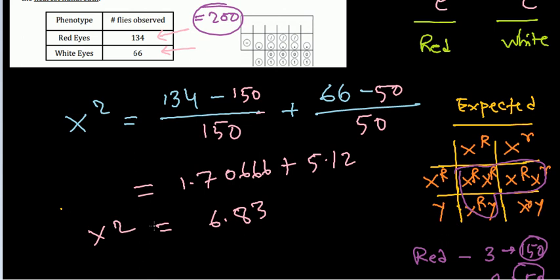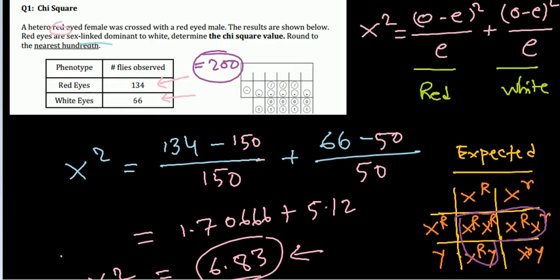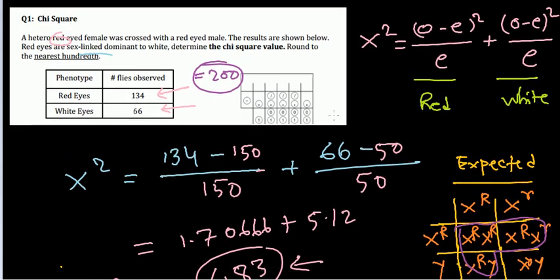I just round off at the later stages, so 6.83 is the chi-square value. That's how we can get the value of chi-square. Some questions can simply ask you for the value of chi-square, sometimes they can ask whether the hypothesis can be accepted or not. But this is the question to be answered: chi-square value is 6.83.